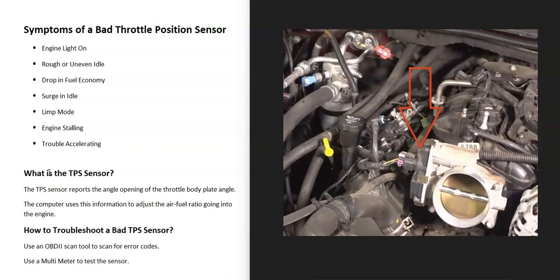Well, the engine light could come on, you could have a rough or uneven idle, you might see a drop in fuel economy, the idle can surge at certain times, some vehicles will go into limp mode, sometimes the engine will stall, like you stop at a stop light or something like that, the engine can stall out. And there can also be problems when you go to accelerate.